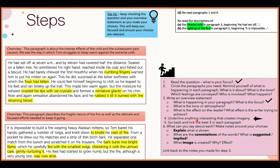Now we're on step four: go through and underline anything interesting that creates imagery. Keep checking the question and your overview as you make your choices to stay focused. I've gone through and picked more than I need — I only need three, but in some cases I've picked twice as much. I'll talk you through a few of my choices so you understand my thought process.